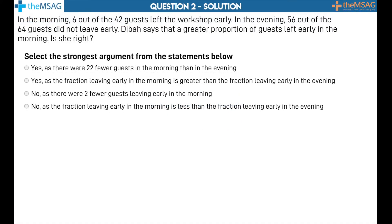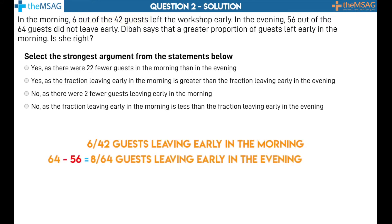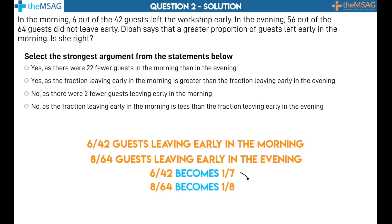Rephrasing the fractions into the affirmative gives the following two results from the morning and evening workshops: 6 out of 42 guests leaving early in the morning, and 8 out of 64 guests leaving early in the evening. Simplifying these fractions by dividing by common factors, we get 6 out of 42 which becomes 1 out of 7, and 8 out of 64 which becomes 1 out of 8. Since 1 out of 7 is a greater fraction than 1 out of 8, and a greater fraction is equivalent to a greater proportion, the answer is that Deba is right — yes, as the fraction leaving early in the morning is greater than the fraction leaving early in the evening.